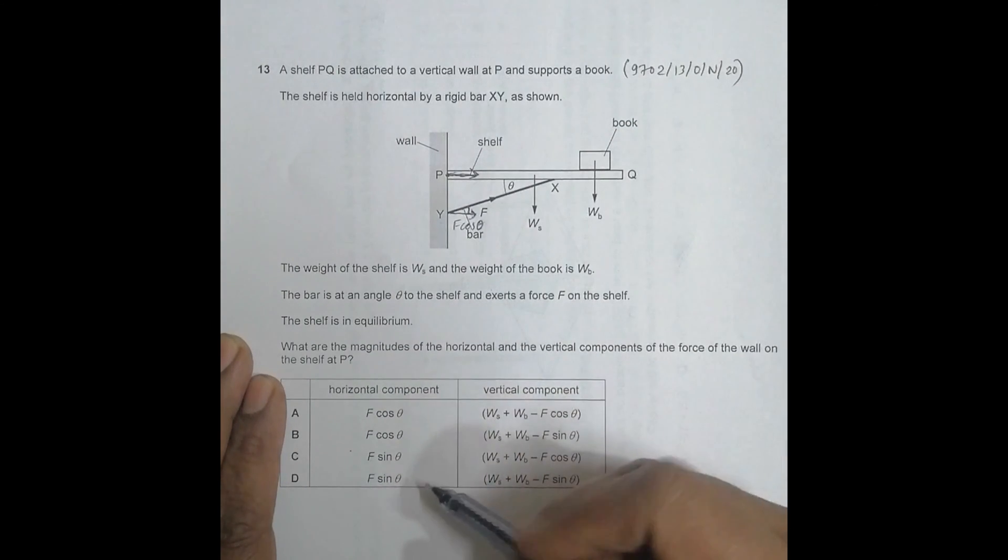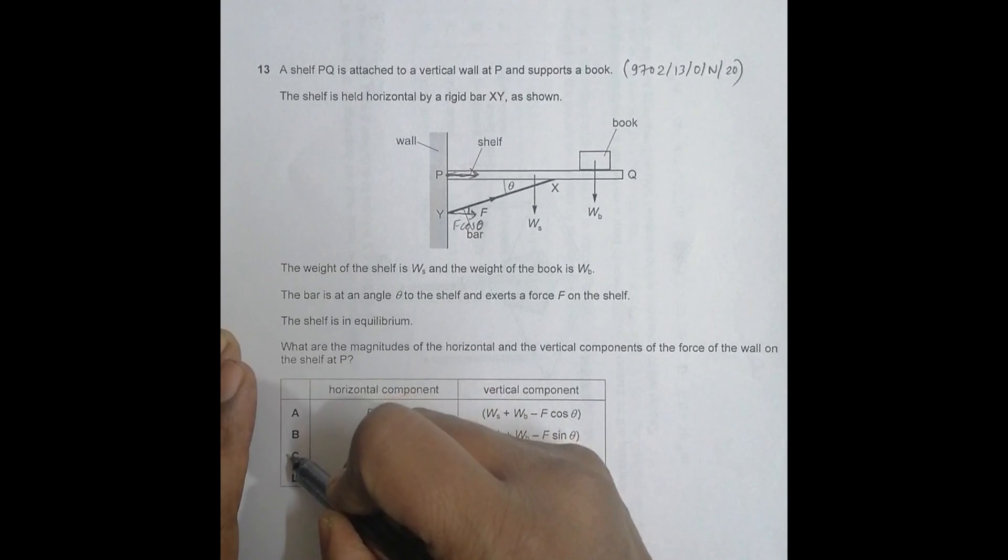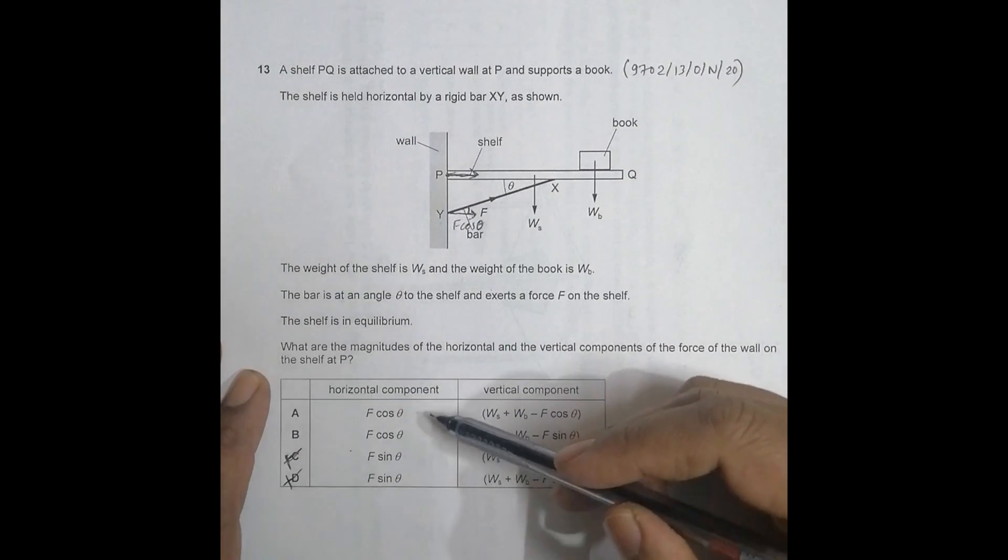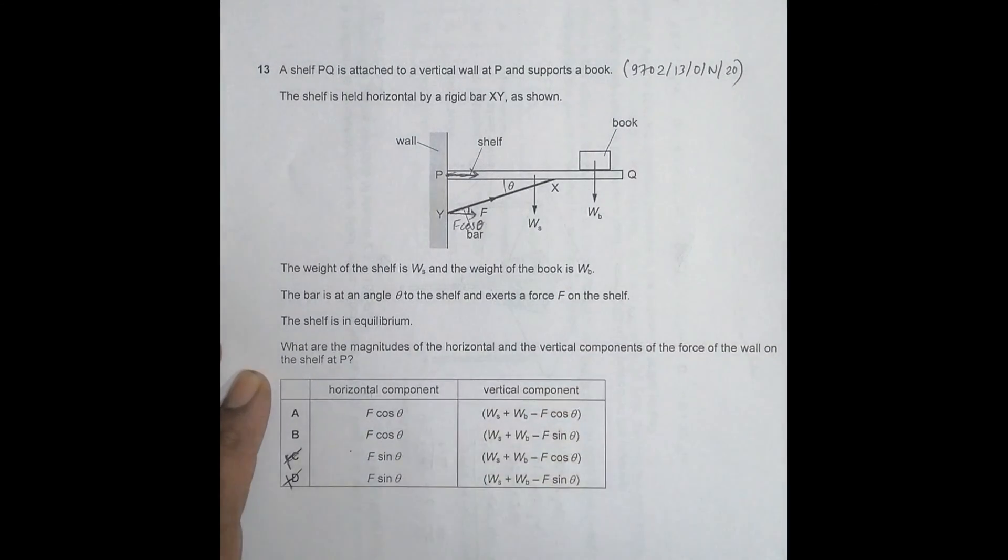So if it is so, then we can remove choice number C and D. Let us cross them. Then the only remaining are choice number A and B.